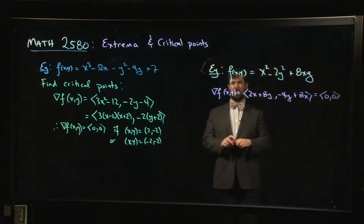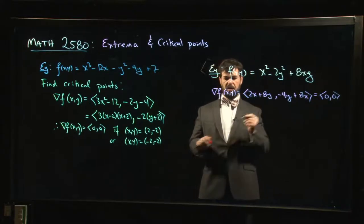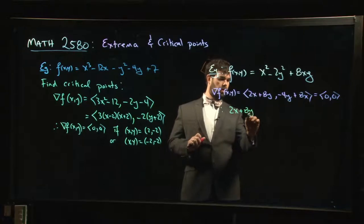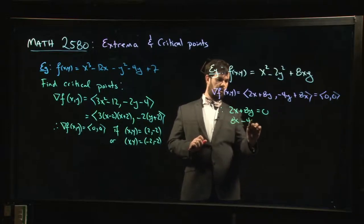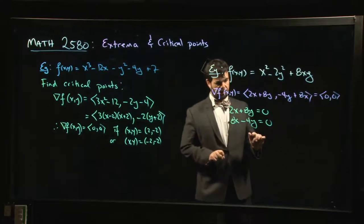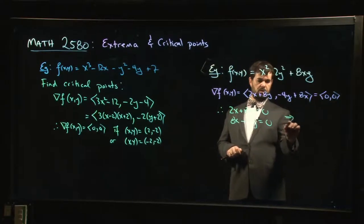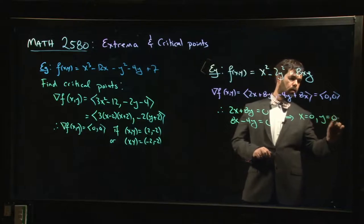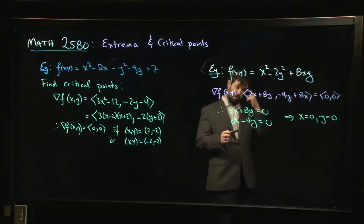This one's actually not going to be so bad. Maybe we're going to tweak this in a second, make it a little bit more exciting. Because what do we get? Well, the first one says that we need 2x + 8y to be 0. The next one says that we need 8x - 4y to be 0. And even if you're a little rusty on your 1410, you can probably work out pretty quickly that the only solution to this system is going to be x = 0, y = 0. So there's one critical point and it's the origin. And we didn't have to do any work to solve that one.